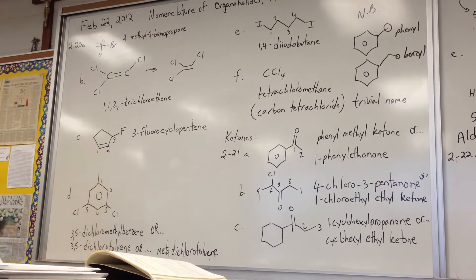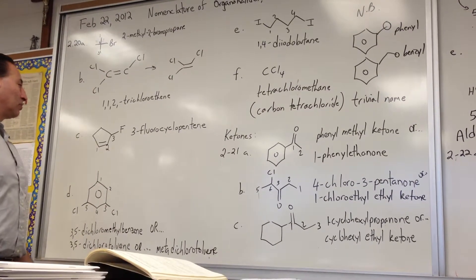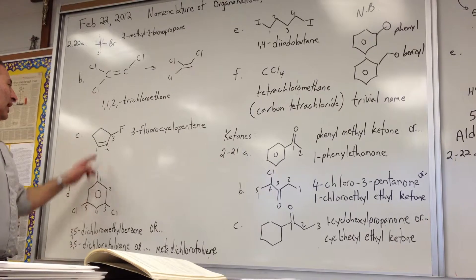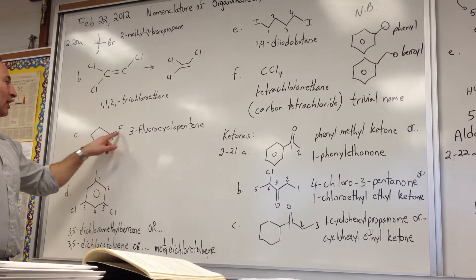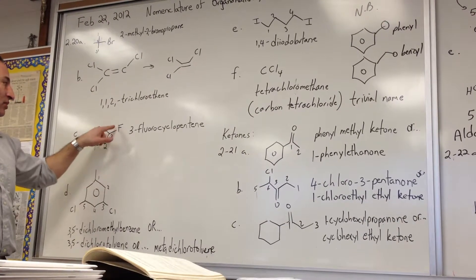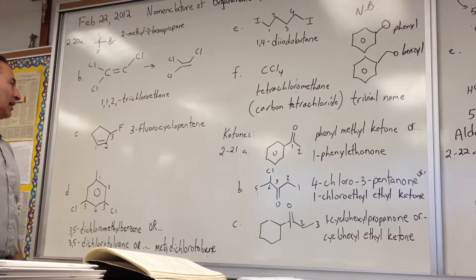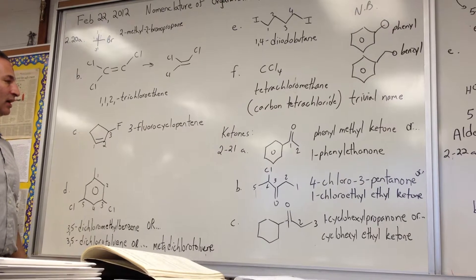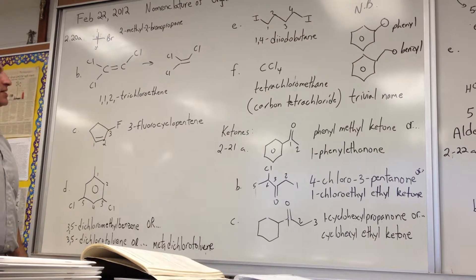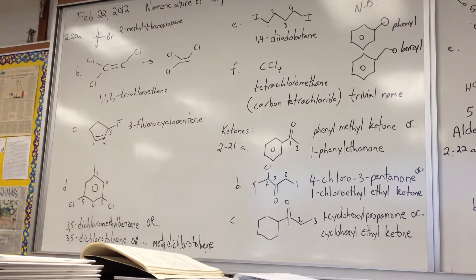Third example, we have a fluorine atom on a cyclopentane with a double bond in it. Alkenes take priority over halides, so the numbering starts over here, it continues through the double bond to the halide. And when the halide is fluorine, we call it fluoro, as a prefix. 3-fluorocyclopentene is the name of this molecule.